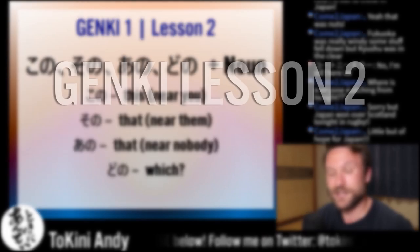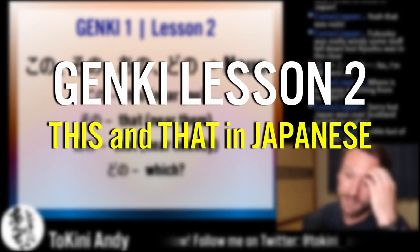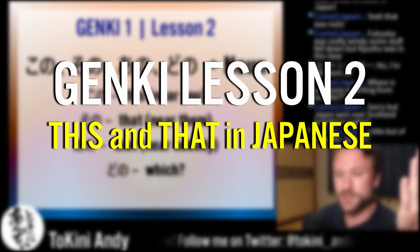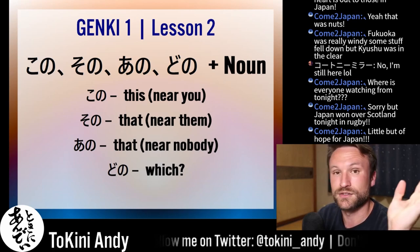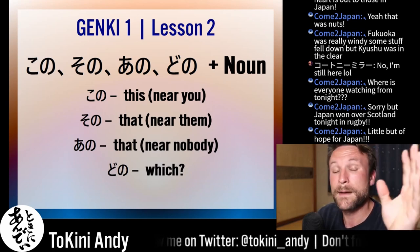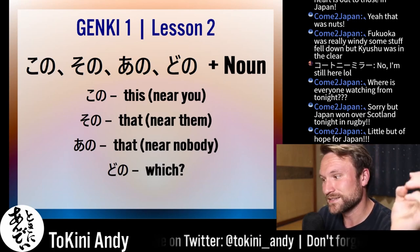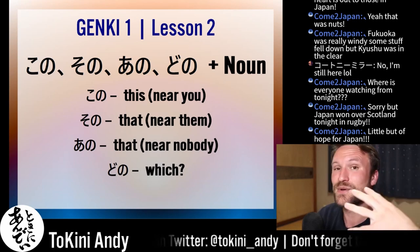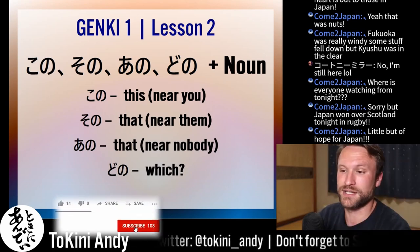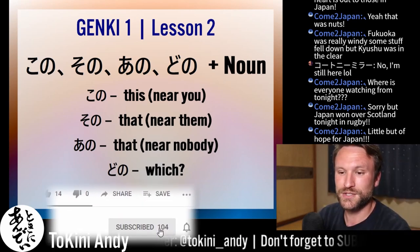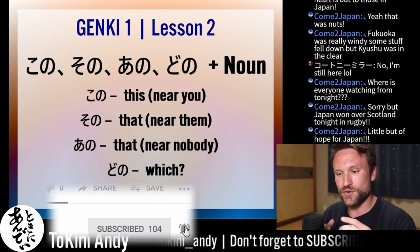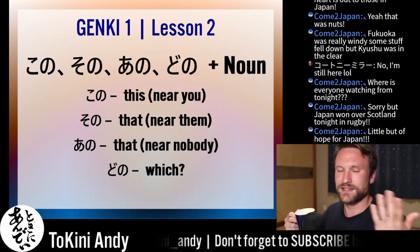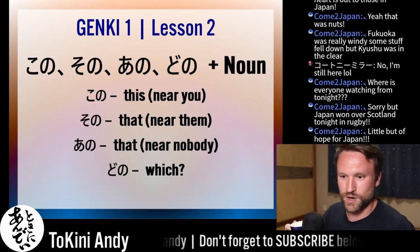These are used very similarly. The rules are very similar. We've got kono, sono, ano, and dono, but for these, you have to have a noun attached to it. So you can't just say 'kono wa nandesuka' — that doesn't work.